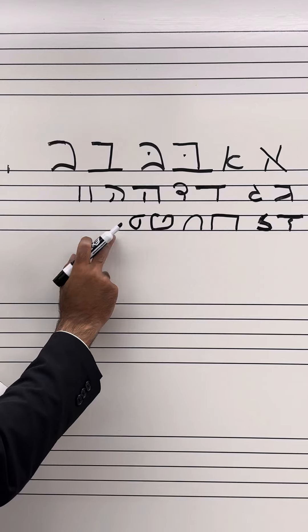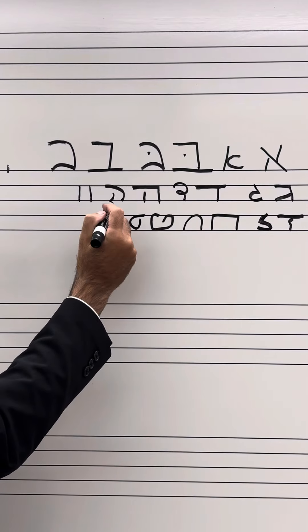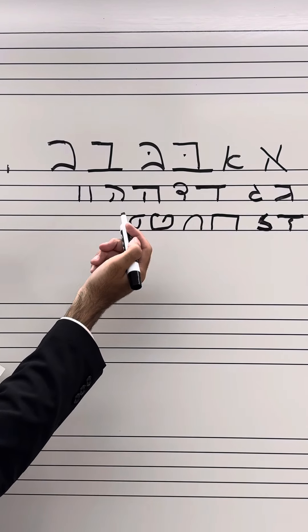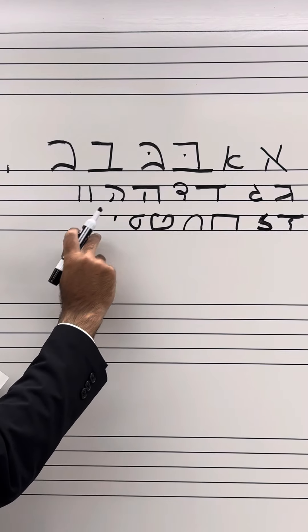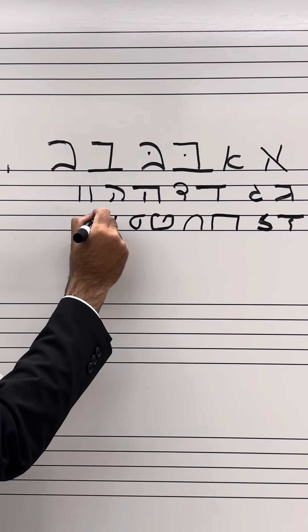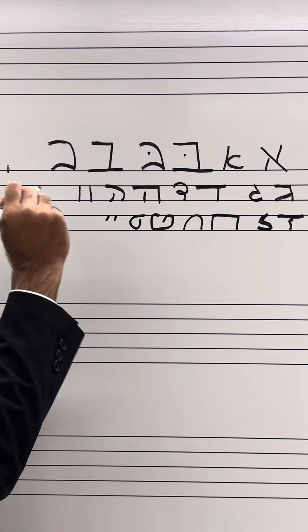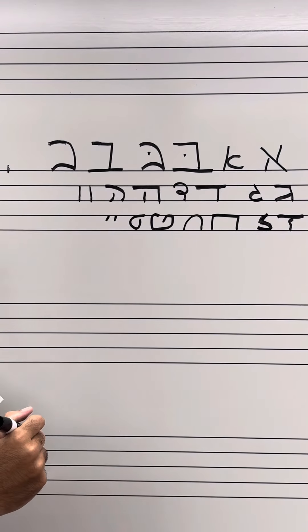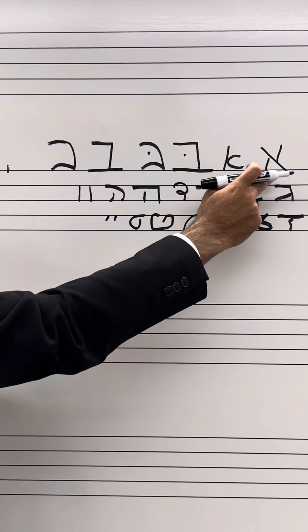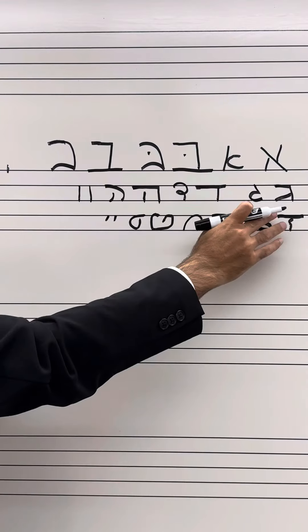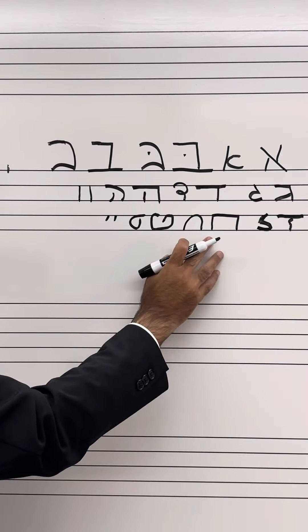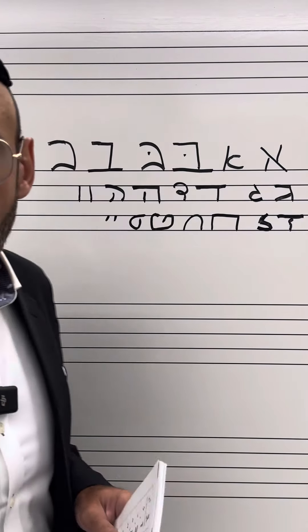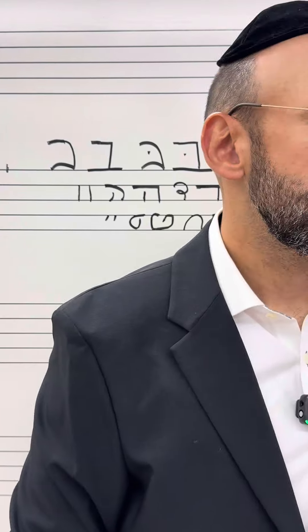Finally, the tenth letter of the Hebrew alphabet is the letter Yud. It appears in the Torah floating above the line like that, and in script it's much the same — just a little chiplet like that. So there you have your ten letters: Aleph, Bet, Vet, Gimel, Dalet, Hey, Vav, Zayin, Chet, Tet, and Yud — the first ten letters of the Hebrew alphabet in block and in cursive.